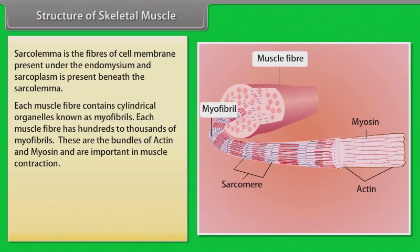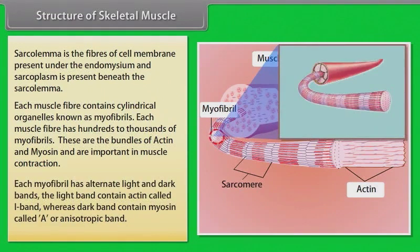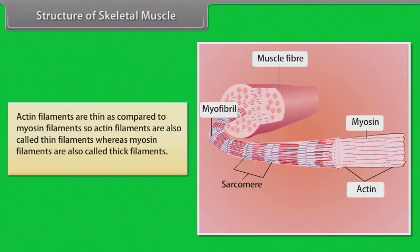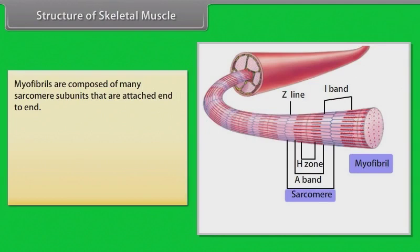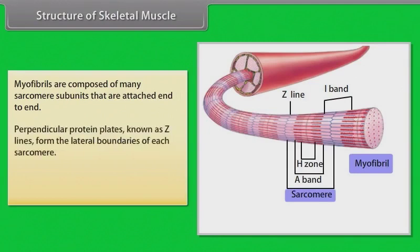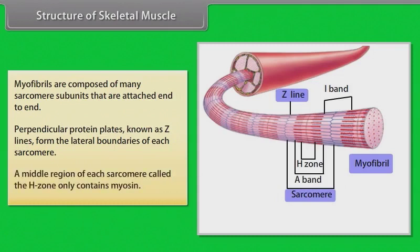Each muscle fiber contains cylindrical organelles known as myofibrils. Each muscle fiber has hundreds to thousands of myofibrils. These are the bundles of actin and myosin and are important in muscle contraction. Each myofibril has alternate light and dark bands. The light bands contain actin, called I-band, whereas the dark band contains myosin, called A-band or anisotropic band. Actin filaments are thin filaments and myosin filaments are thick filaments. Myofibrils are composed of many sarcomere subunits attached end to end. Perpendicular protein plates known as Z-lines form the lateral boundaries of each sarcomere. The middle region of each sarcomere, called the H-zone, only contains myosin.